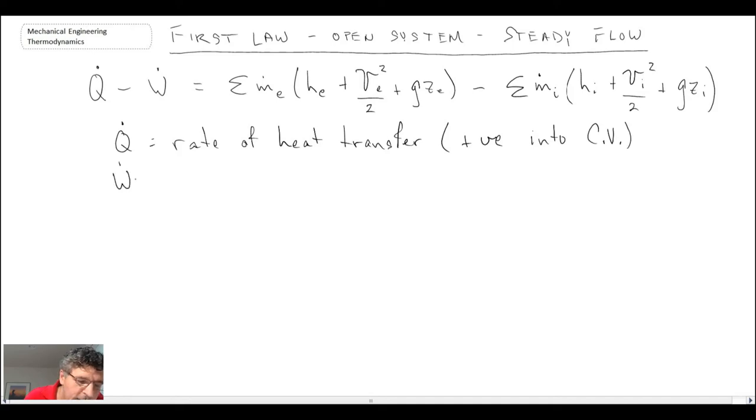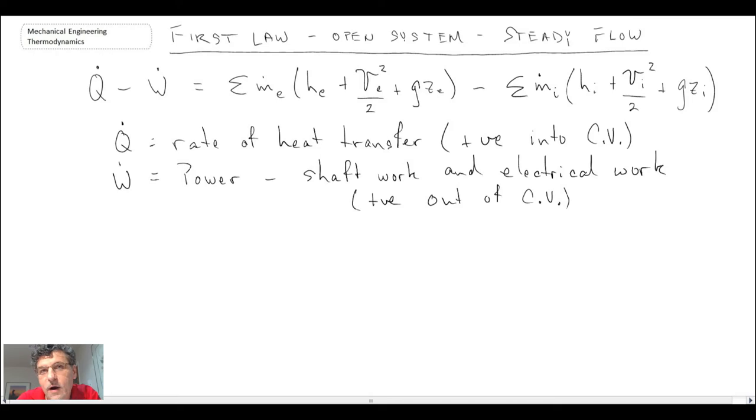Work, that is work being done by the system. It could be shaft work and electrical work or the other types that we've been looking at. We will use the convention with that being positive out of control volume. So we put the heat in and that is positive. Work is being done by the system and that is positive.